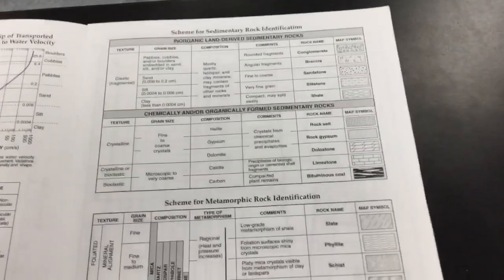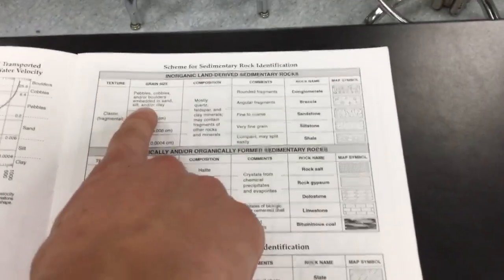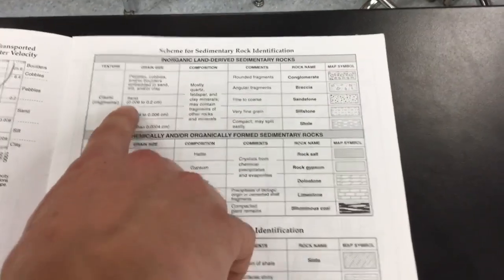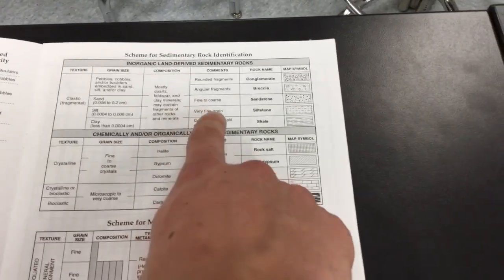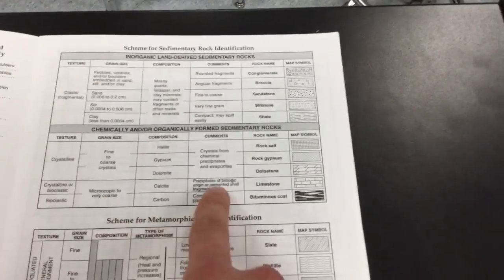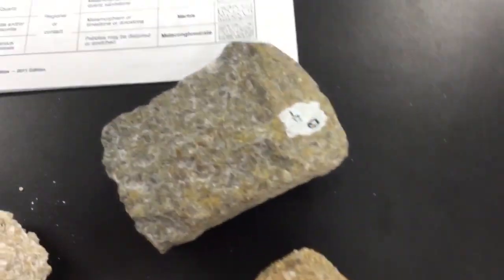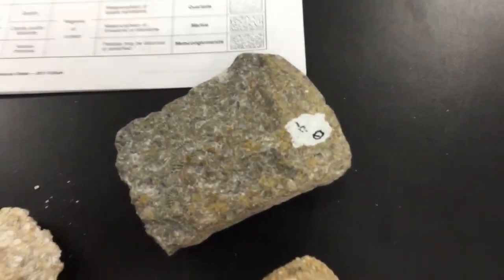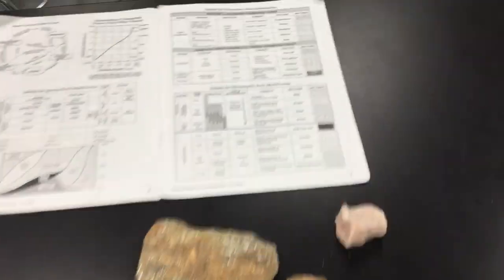So those are sedimentary rocks — most of it's in the reference table: made of pebbles, made of sand, composed of shell fragments, or it's got fossils. The final type of rock is metamorphic.